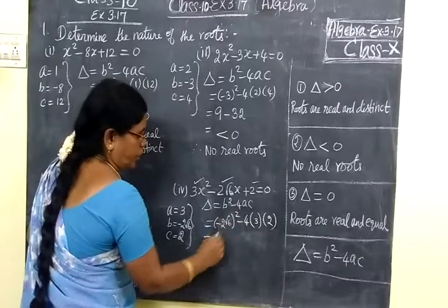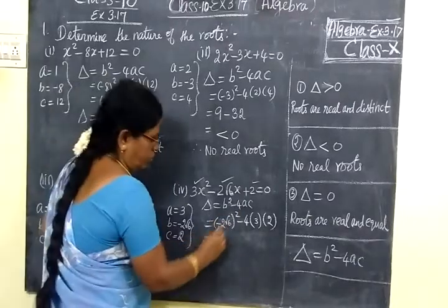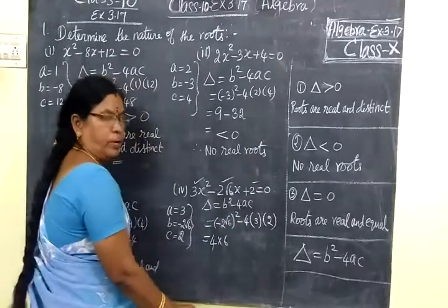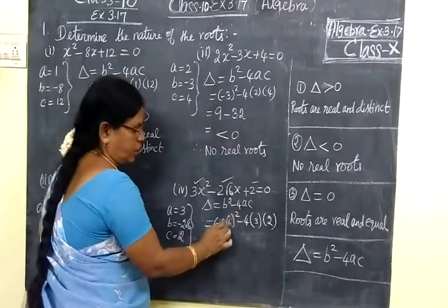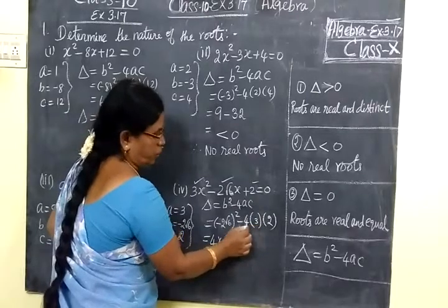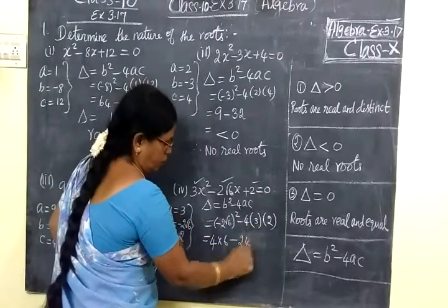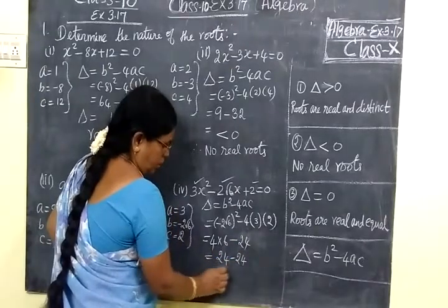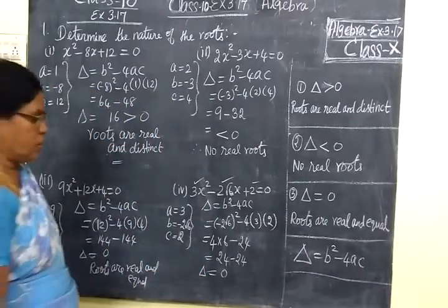So 2 squared is 4, √6 squared is simply 6, so root square cancels, giving us 24. Then 4 times 3 times 2 equals 24. So 24 minus 24, here equals 0. Since Δ = 0.